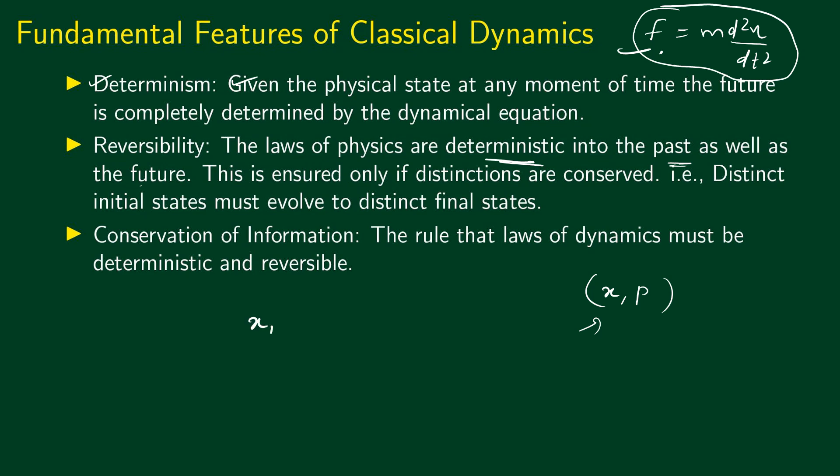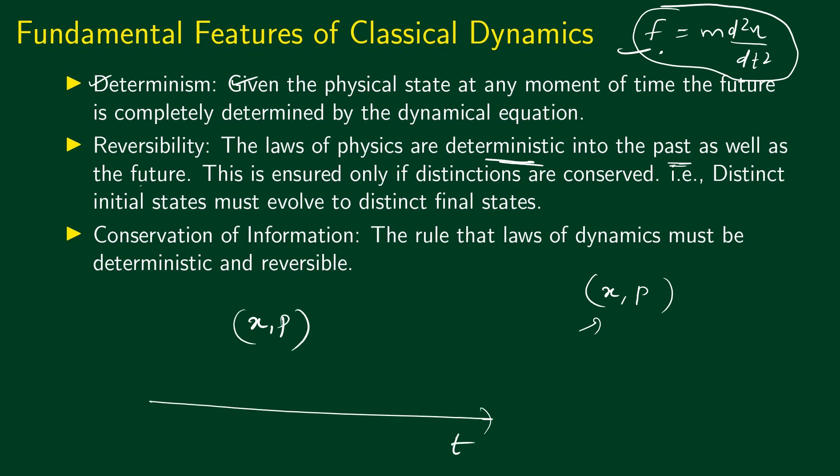If we know the position and momentum — the state of the classical mechanical system — at any time, the future as well as the past are completely determined by Newton's equation, or whichever dynamical equation you are working with. We can equivalently formulate the dynamics using Lagrange's equations or Hamilton's equations. All these equations are deterministic and reversible: if the state of the system is given at any time, the past as well as the future are completely determined.